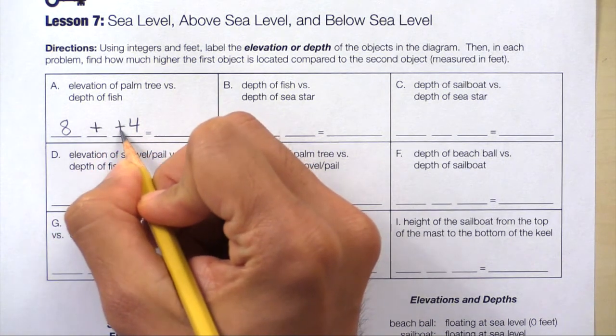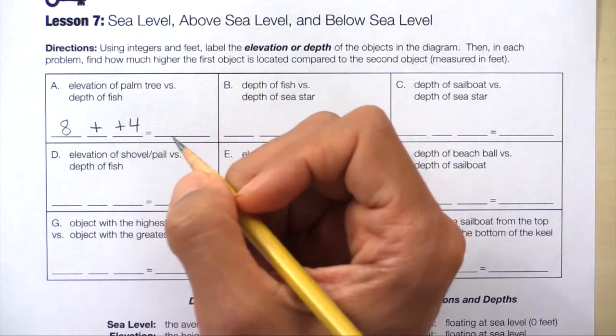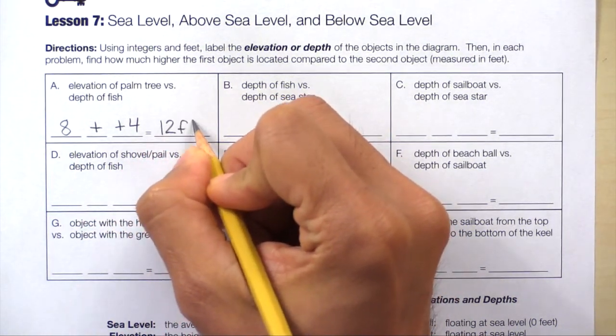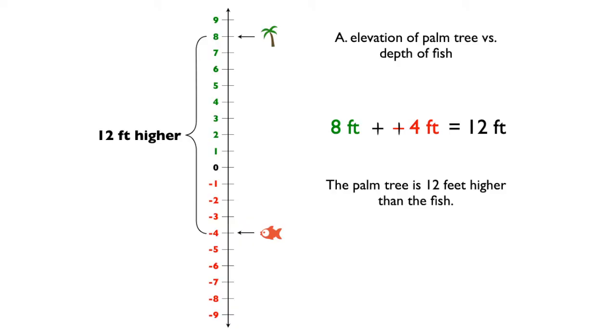1, 2. Now we have the problem 8 plus 4, which gives us 12 feet. So the palm tree is 12 feet higher than the fish.